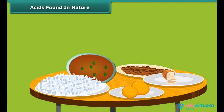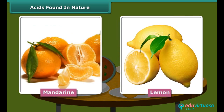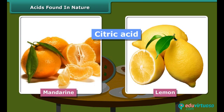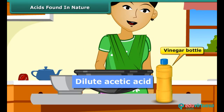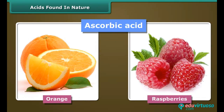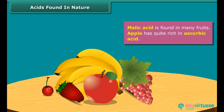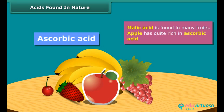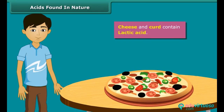Different food items contain different acids. Citrus fruits like orange, grapes, mandarin, and lemon contain citric acid. Vinegar found in our kitchen is dilute acetic acid. Ascorbic acid is found in guava, orange, and raspberries. Malic acid is found in many fruits — apples are quite rich in it. Cheese and curd contain lactic acid.